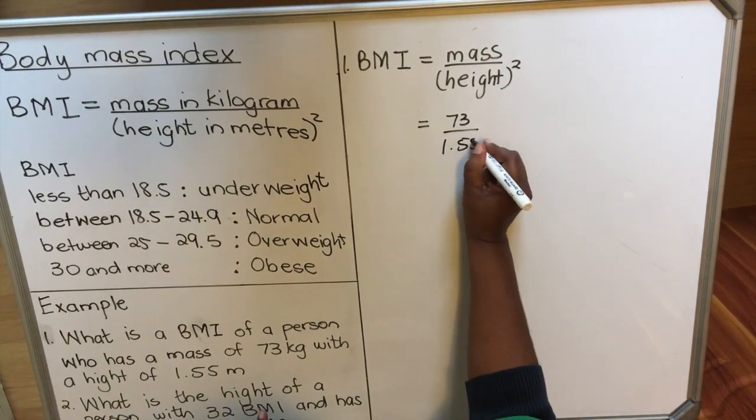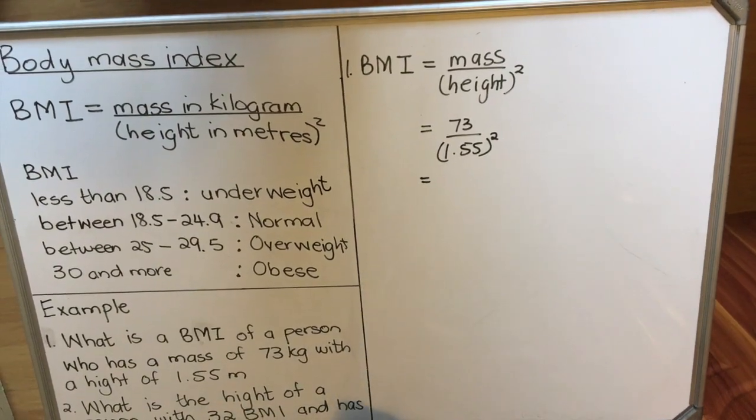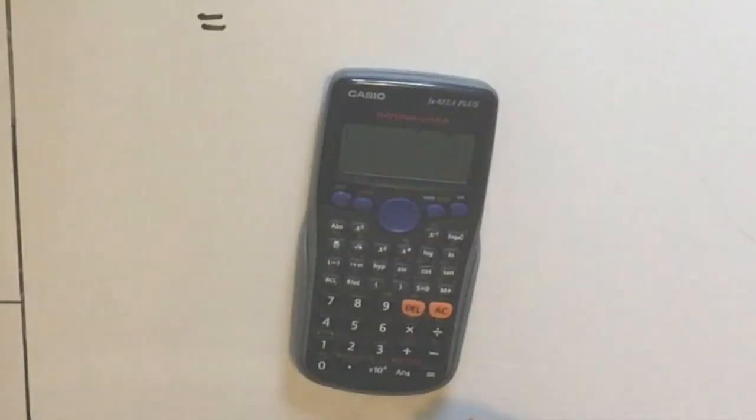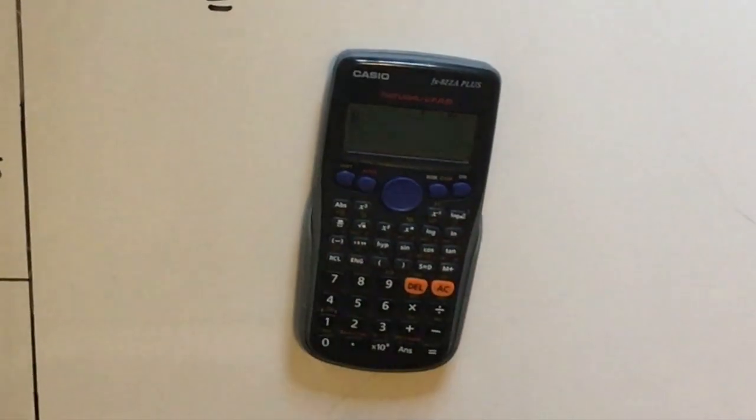Let me show you how you do that in a calculator. When you're using a natural display calculator, it has a fraction button. You can press the fraction button and then 73 on top.